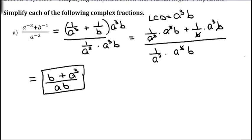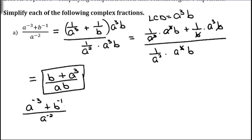There is another way that you can do this, and if you're more comfortable with this next method, you can go ahead and use it. You look at your variables and pick out the one with the larger number. This is a negative 3, and 3 is bigger than 2, so we're going to multiply by a cubed. And this is the only b we have, so we're just going to do b to the first. So we come to the same conclusion — we're multiplying by a cubed b on both the top and the bottom.